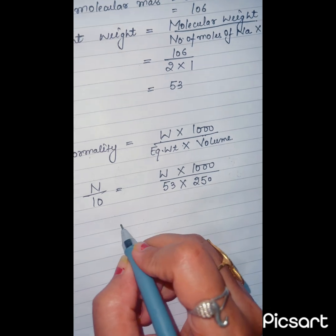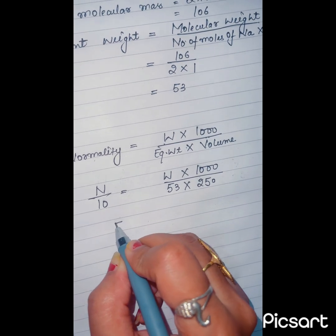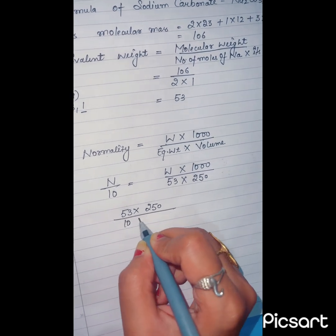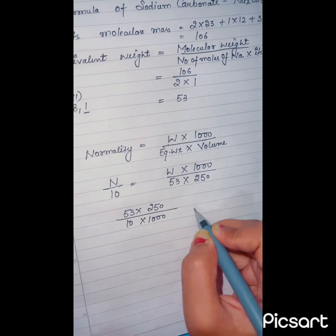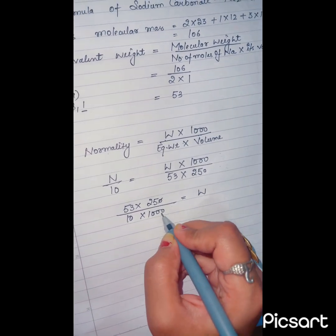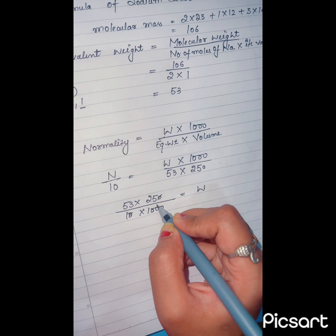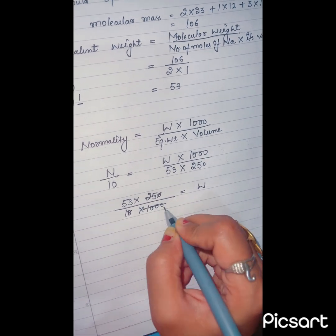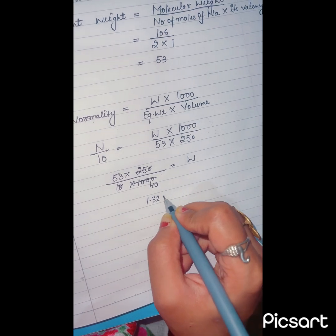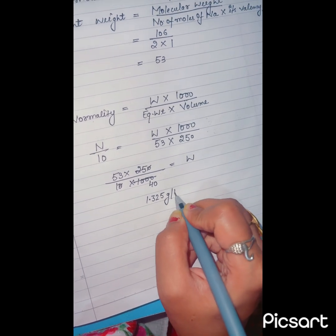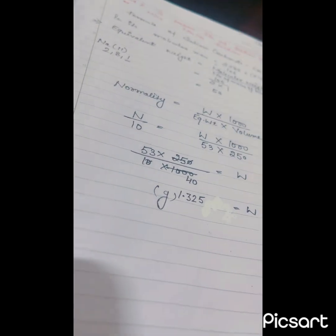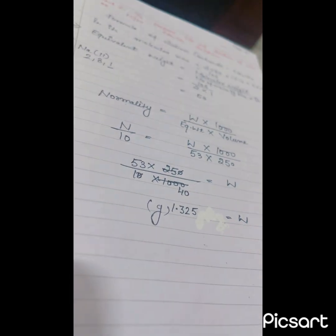Now 53 into 250 divided by N by 10 into 1000, that is W. This equals 1.325 grams. That is the weight amount. Now our value comes to 1.325 grams.